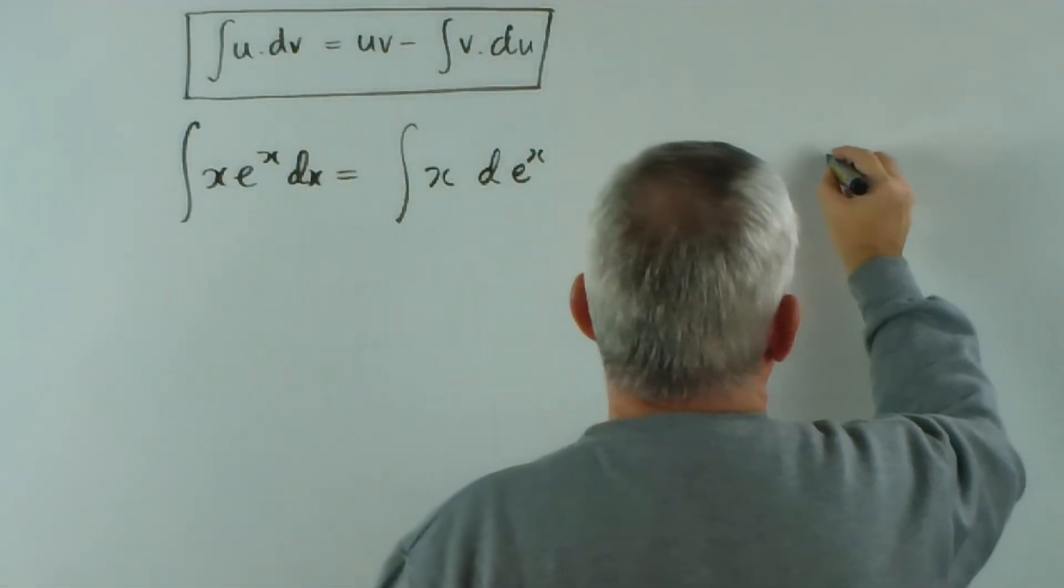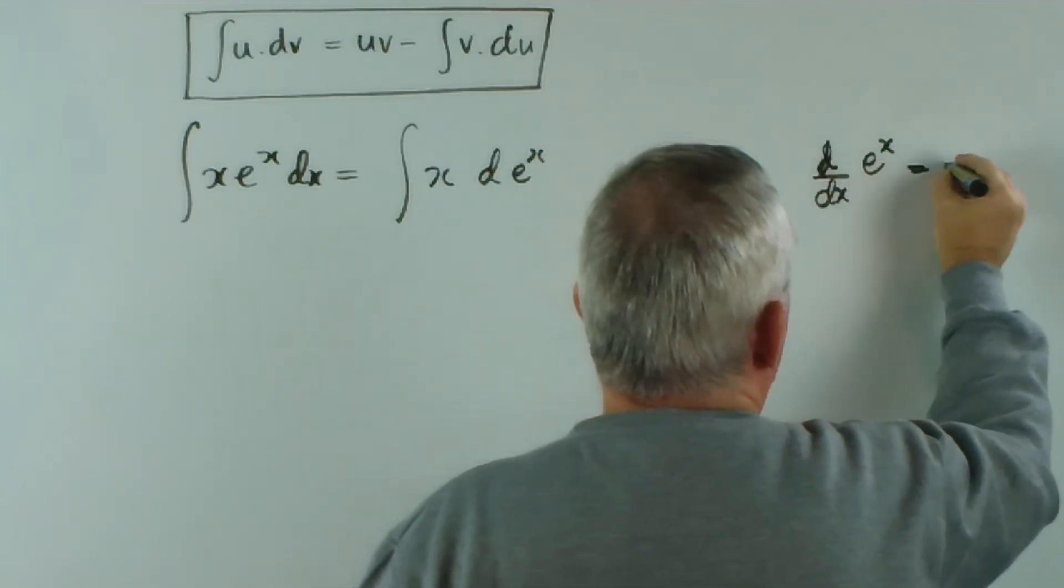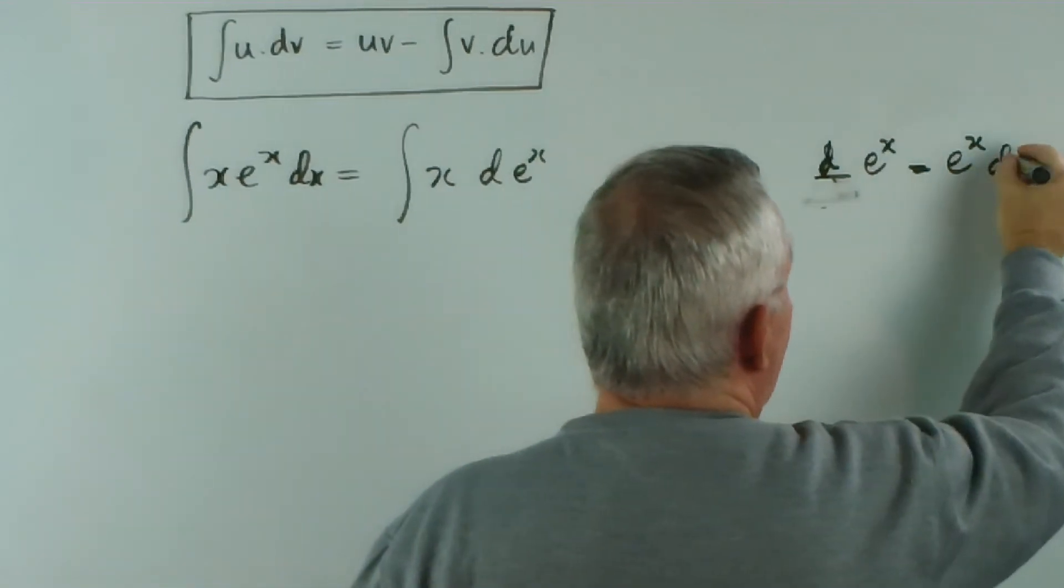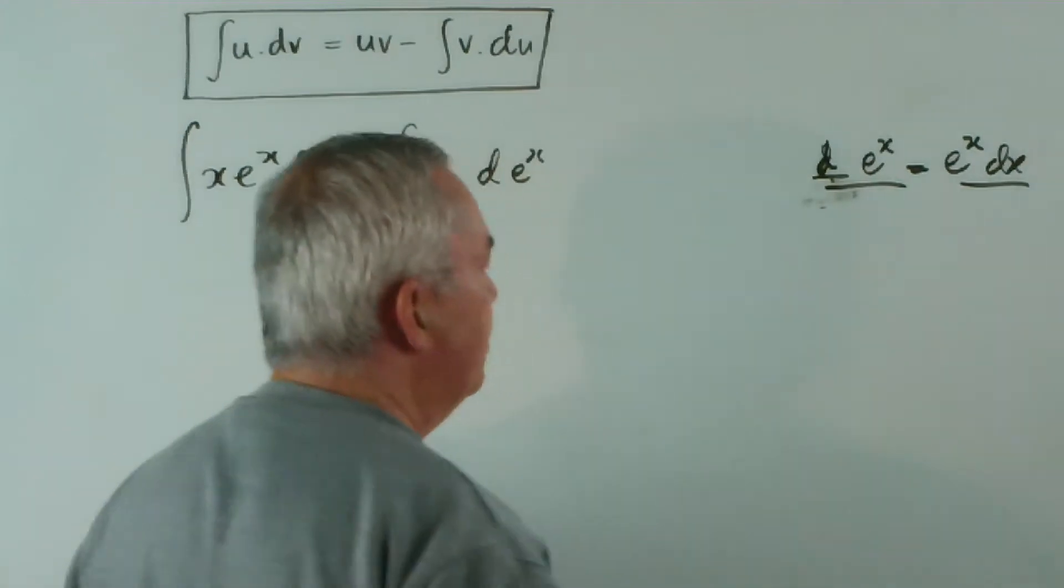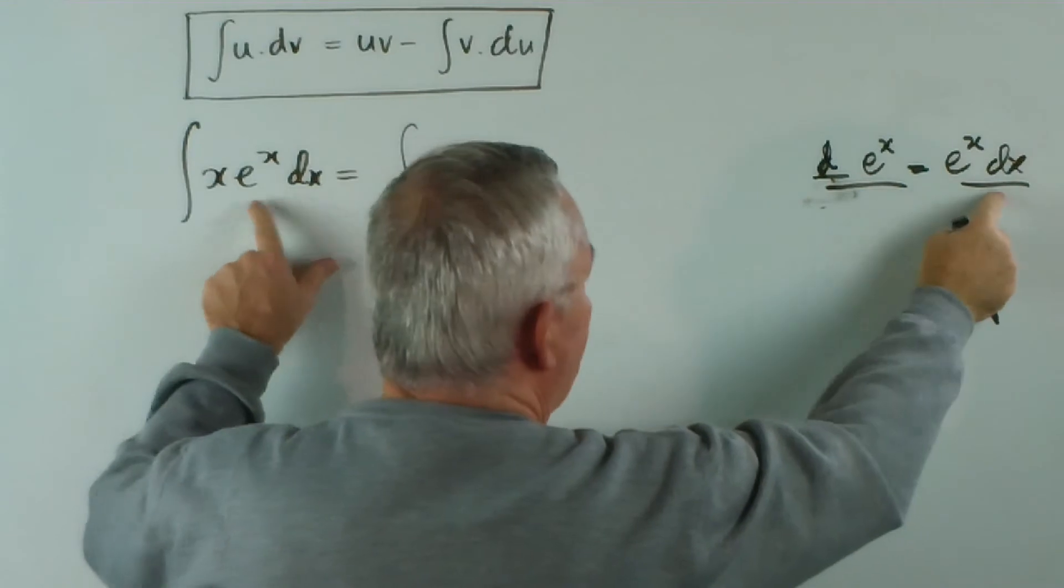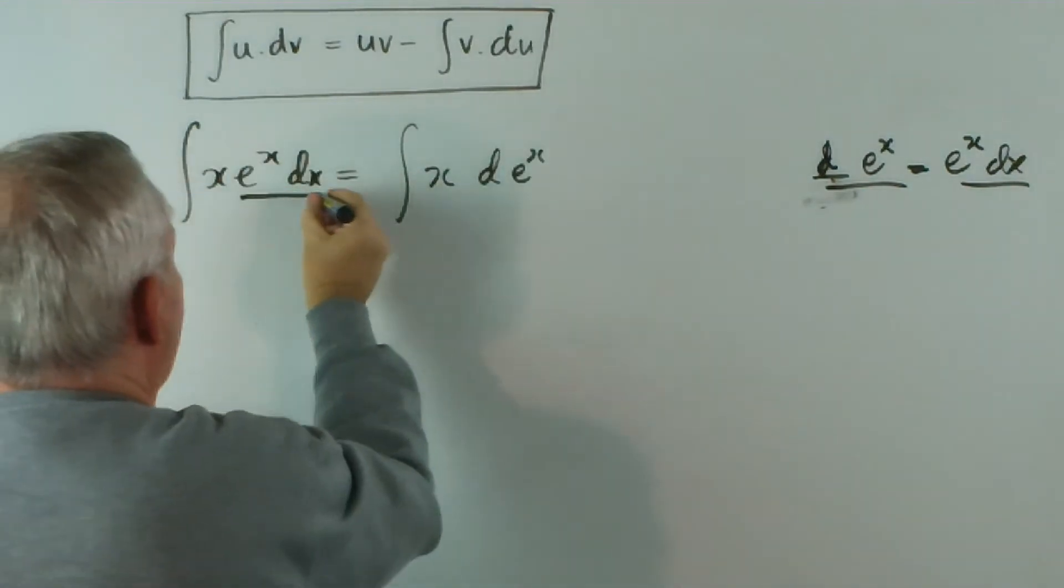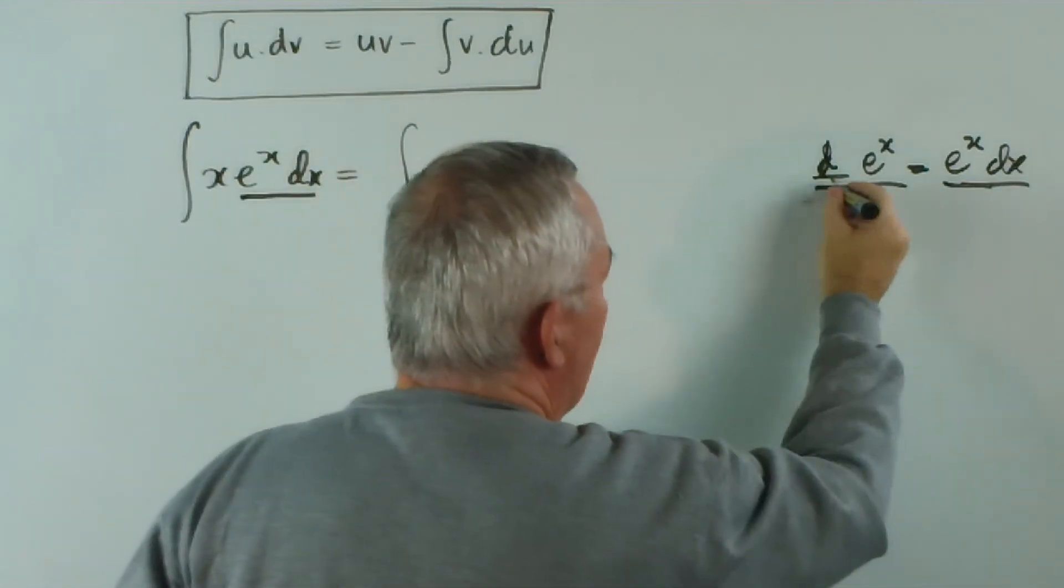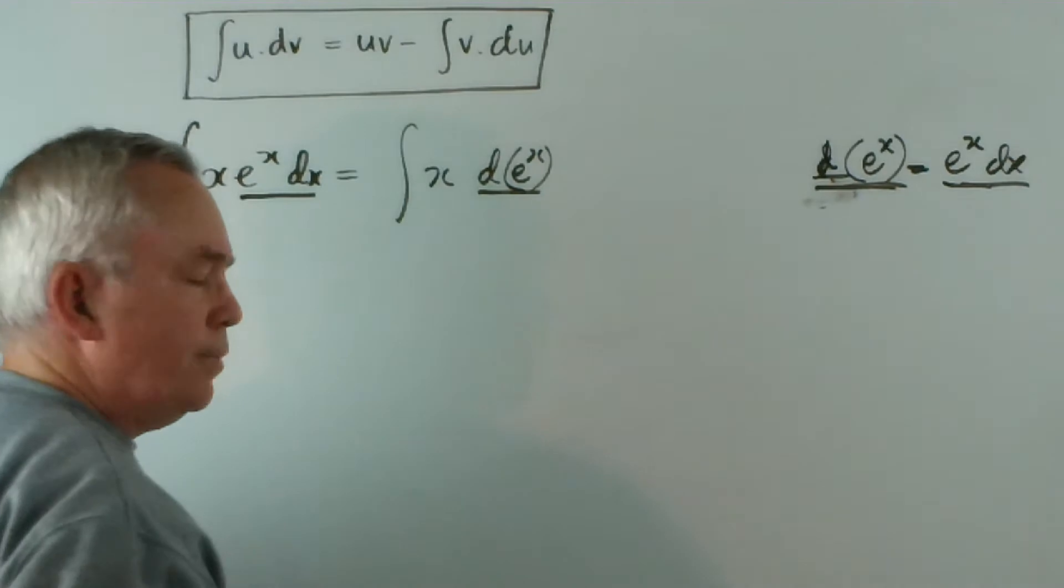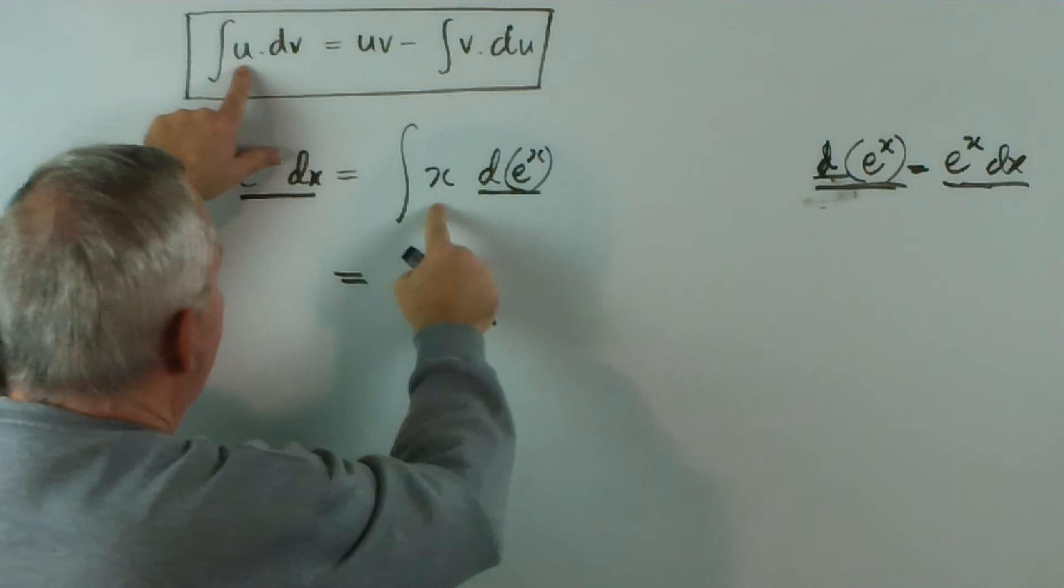And we can do that because the derivative of e^x is e^x. Again, if you wish to check this on the side of the page, find the derivative of e^x, which is e^x, move the dx up over here, and there you have the equivalent. So the e^x dx that we have here, I've got my head out of the road. I'll underline it. It exactly matches the derivative of e^x.